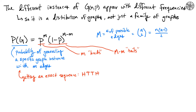The key observation is that each graph instance appears with a different probability. Just as a specific coin-flip sequence like H-T-T-H has the same probability as T-H-H-T — both have the same number of heads and tails but appear in different order — we're quantifying the probability of an exact sequence. On the next step, we'll consider how this changes if all we care about is the number of heads and tails, not the order.